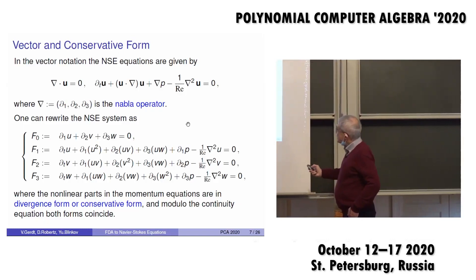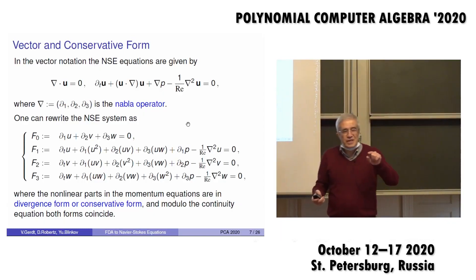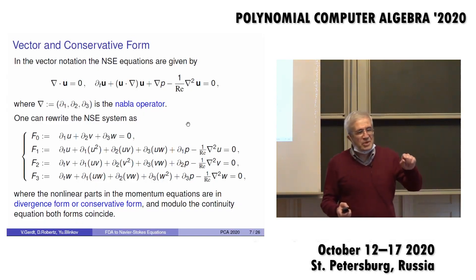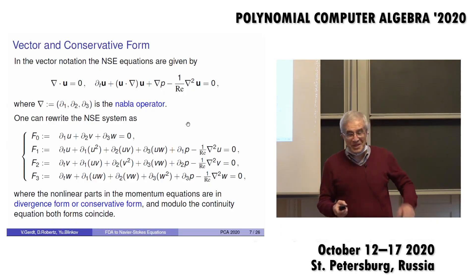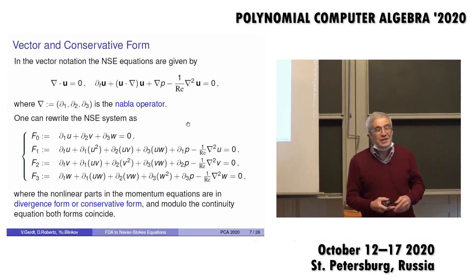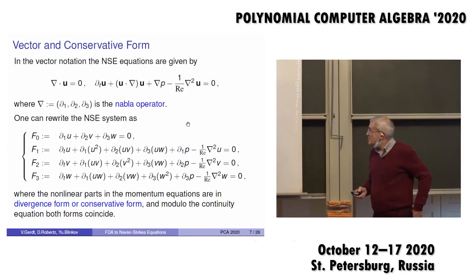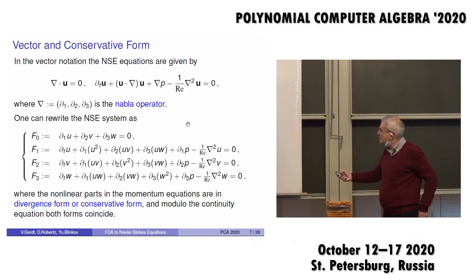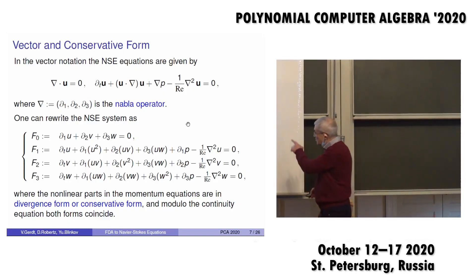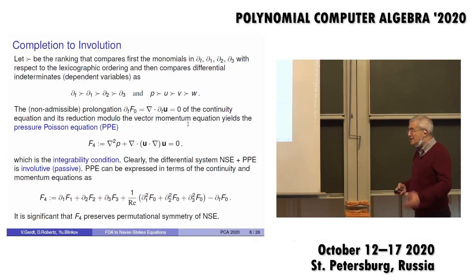I write the Navier-Stokes equations first in vector notation, then our philosophy — following our first paper with Yuri — is: if you can, first rewrite your system into conservation law form. That is the first step of our algorithm. The second step is to reformulate in integral conservation law form, though we won't use that here. So I rewrite with divergence D1, D2; the velocities in divergence form — it is the conservative form.